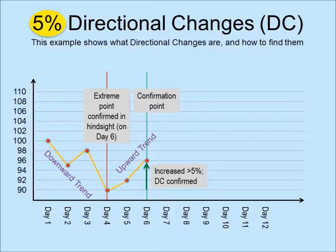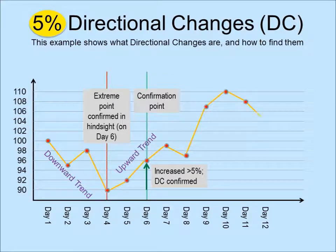In an upward trend, we record the highest price so far. The highest price in the current trend is 96. We are now watching out for the next downturn. Suppose subsequent price changes were 99, 97, 107, 110, 108, and 104. 97 is only 2% below 99, the highest point in the current trend, so it does not signal a directional change of our interest.